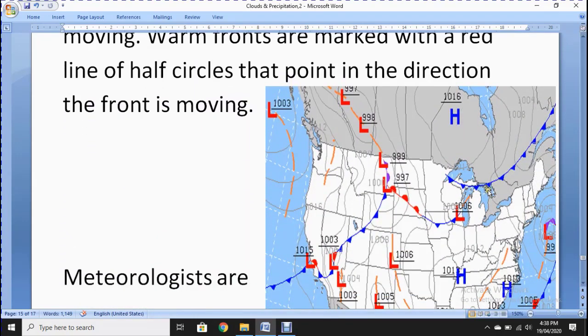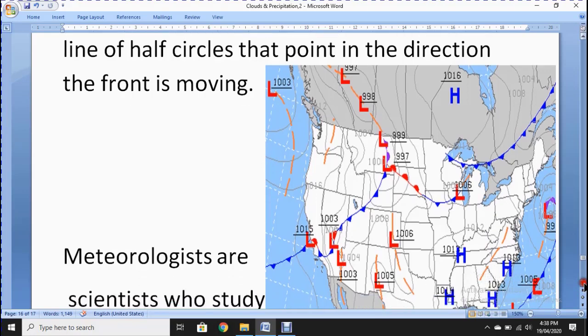These are the blue triangles and these are the red half circles and this H for high and L for low. H for high pressure and L for low pressure. They make the lines and indicate to you and tell you what will be the weather there. With the help of these triangles and half circles you can understand easily.